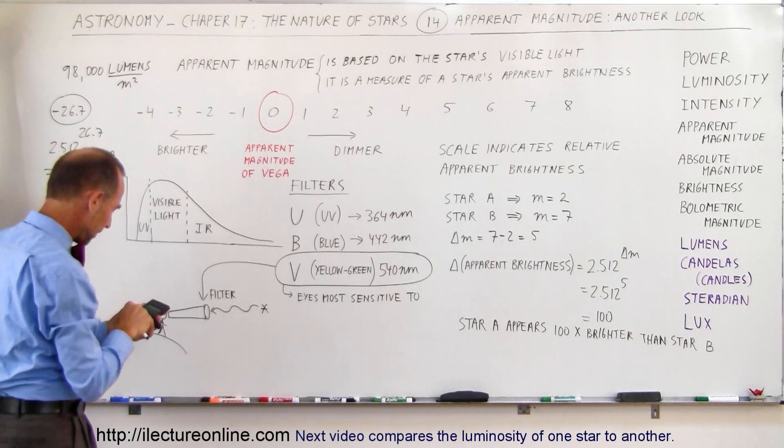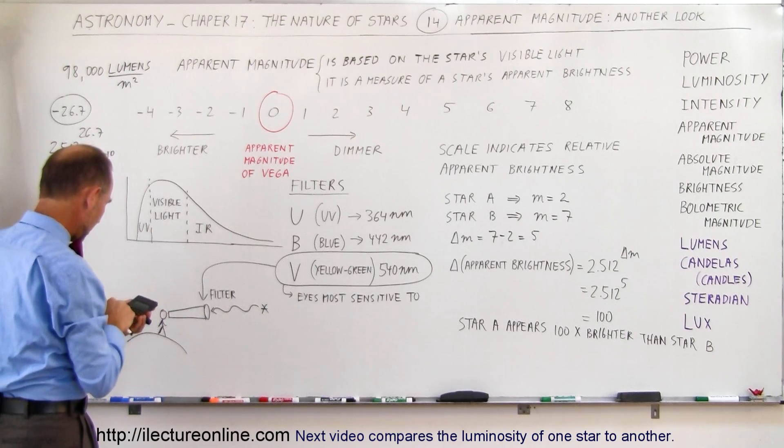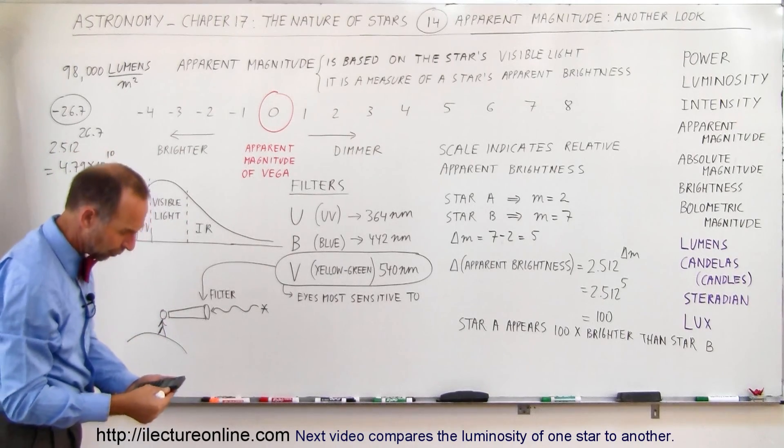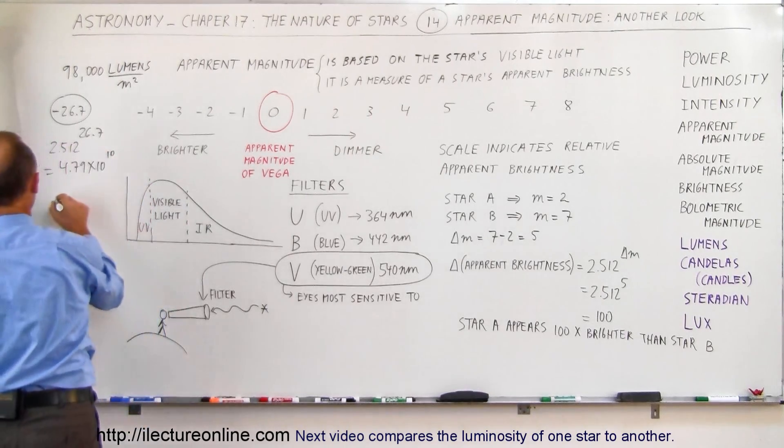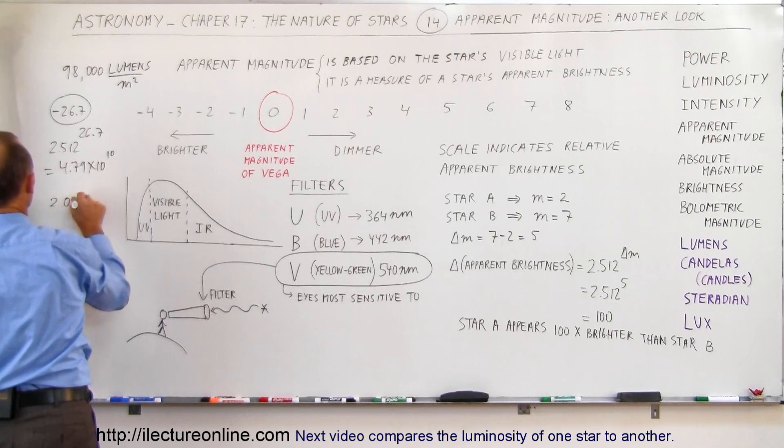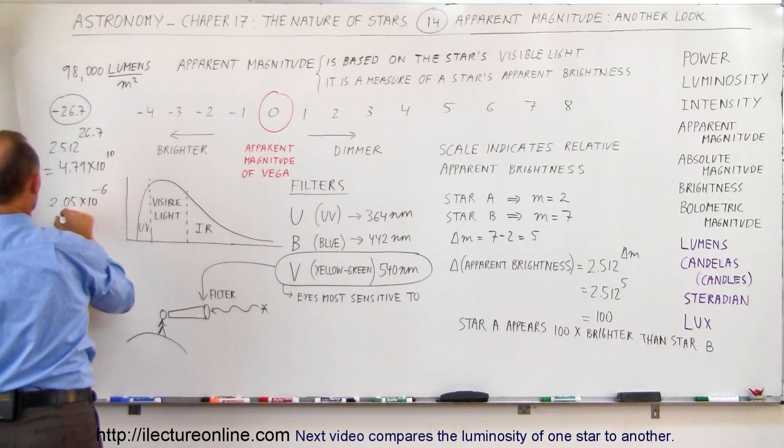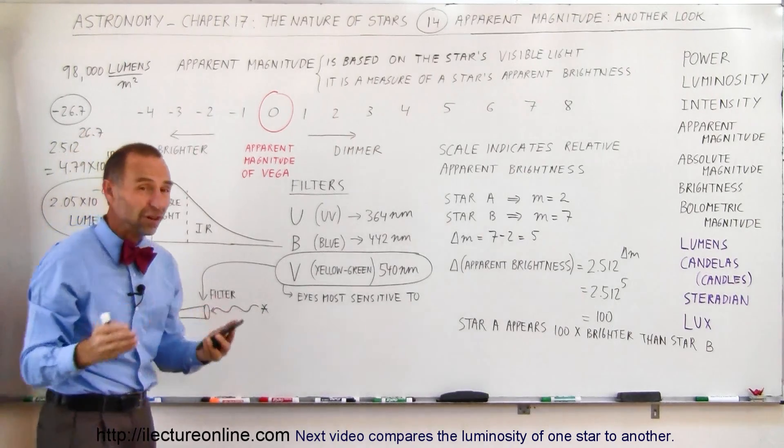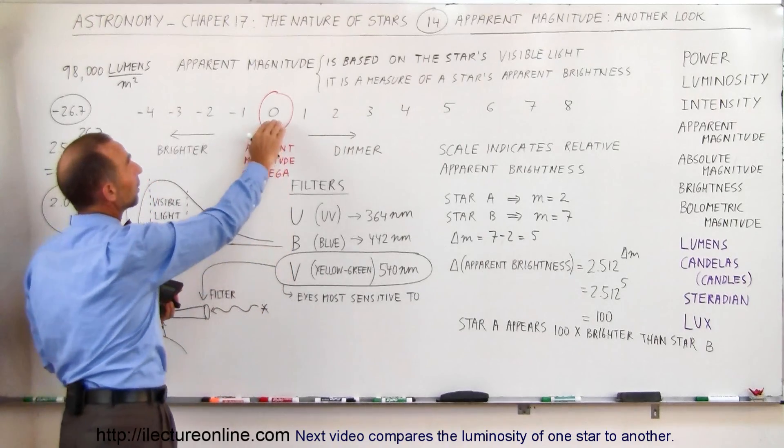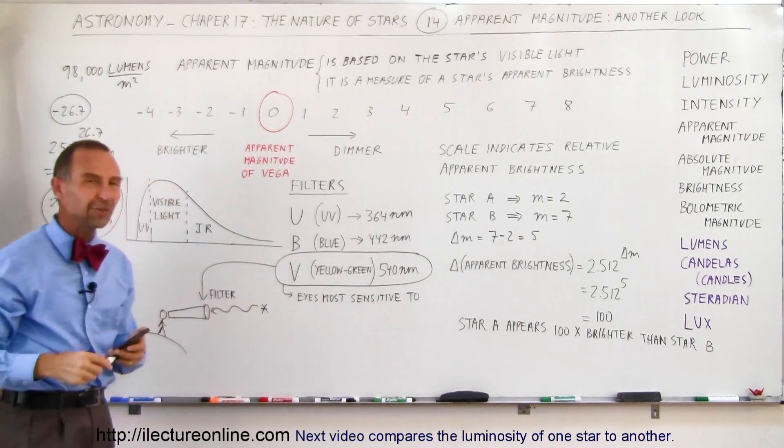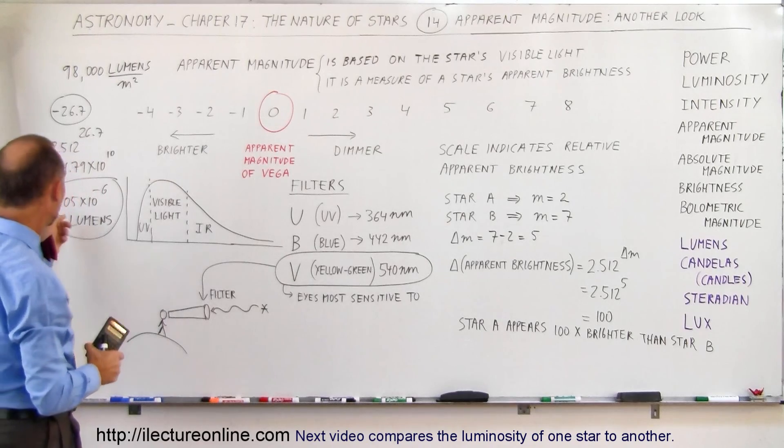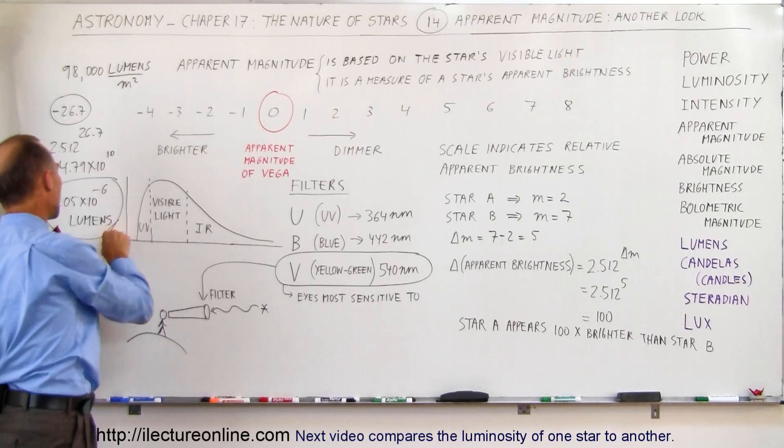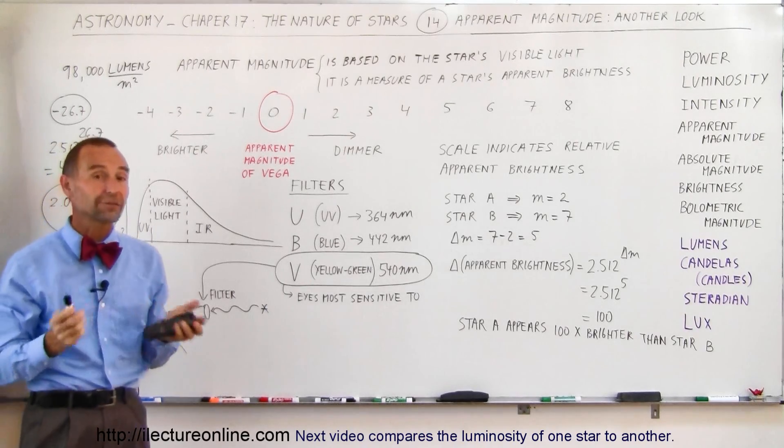will give us a brightness measure on the Earth of 98,000 lumens divided by this number. So I'm going to do that. Take the inverse of that and times 98,000 lumens and we get something like 2.045, roughly about 2.05 times 10 to the minus 6 lumens. Which means that if we have a star like Vega, which has an apparent magnitude of zero, that means the amount of light we get from that star is about 2.05 times 10 to the minus 6 lumens per square meter. That would be the apparent brightness in lumens for a star like Vega.